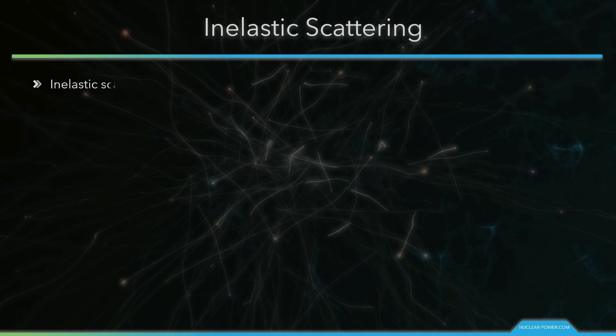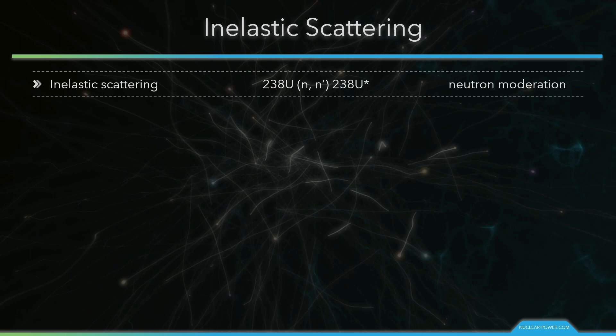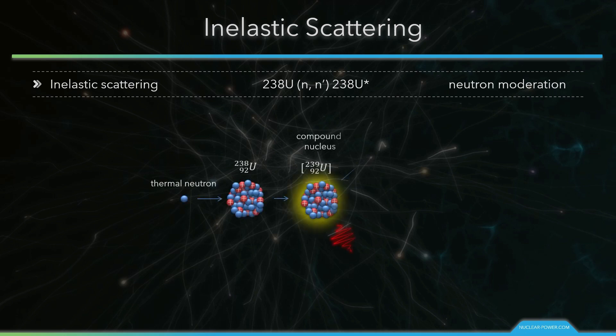In inelastic scattering, the particle is absorbed and then re-emitted. The difference of kinetic energies is saved in an excited nuclide. An inelastic scattering plays an important role in slowing down neutrons, especially at high energies and by heavy nuclei.